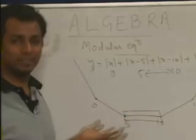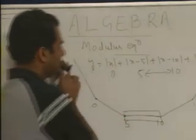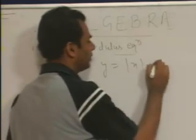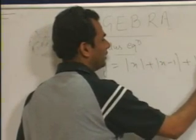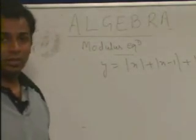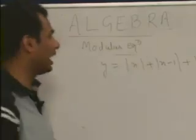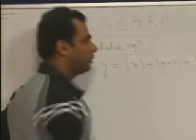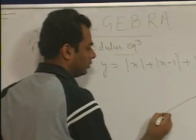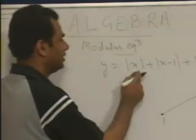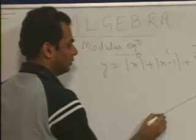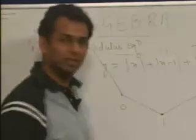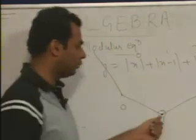Similarly for odd terms we can find out the answer. For example, if the function is y = |x| + |x - 1| + |x - 3|, the number of terms is odd. If you plot the graph on the similar pattern, there are 3 critical points: 0, 1, and 3. Beyond 3 the graph goes up, at 1 there is another point, and before 0 it goes up as well. When the graph is like this you get only one point at which the minimum value exists.